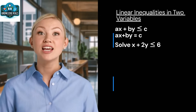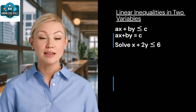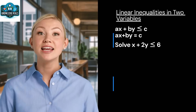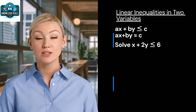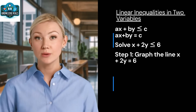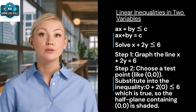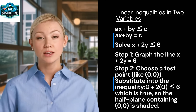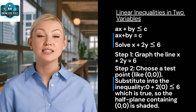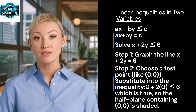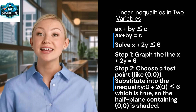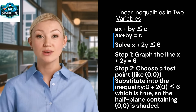We then determine which half-plane satisfies the inequality by choosing a test point. For example, solve x + 2y ≤ 6. Step 1: graph the line x + 2y = 6. Step 2: choose a test point like (0, 0). Substitute into the inequality: 0 + 2(0) ≤ 6, which is true. So the half-plane containing (0, 0) is shaded.